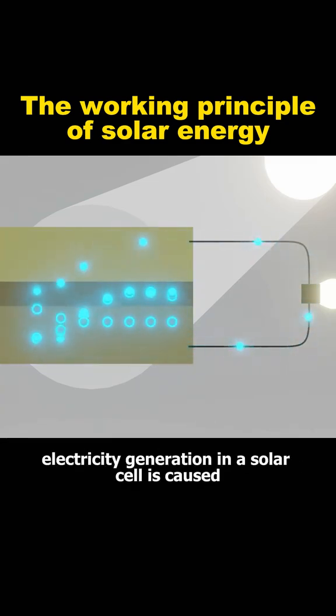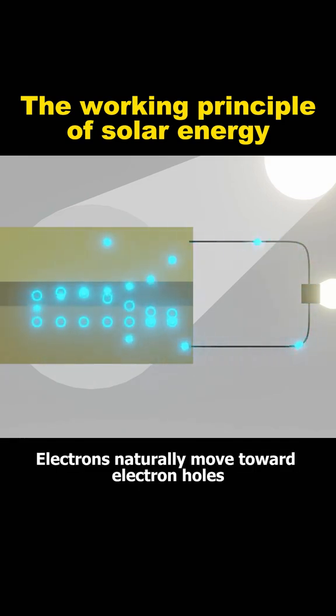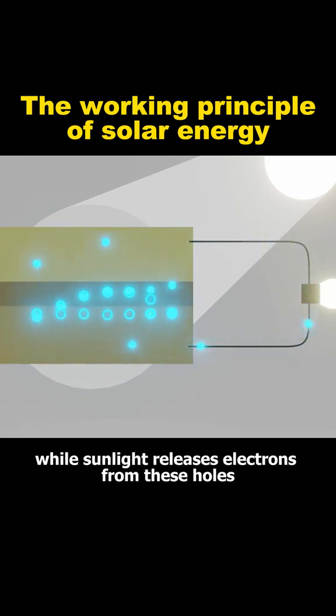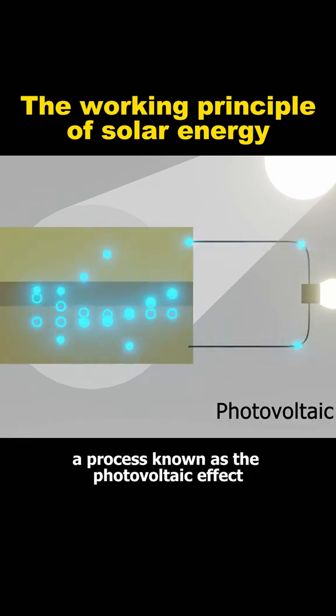Therefore, electricity generation in a solar cell is caused by the movement of electrons into and out of electron holes. Electrons naturally move toward electron holes, while sunlight releases electrons from these holes. This mechanism creates a continuous flow of electrons, a process known as the photovoltaic effect.